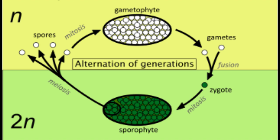In the sexual phase, which is the gametophyte generation, it produces gametes and is haploid with a single set of chromosomes. The sporophyte, which is asexual, produces spores and is diploid with a double set of chromosomes.